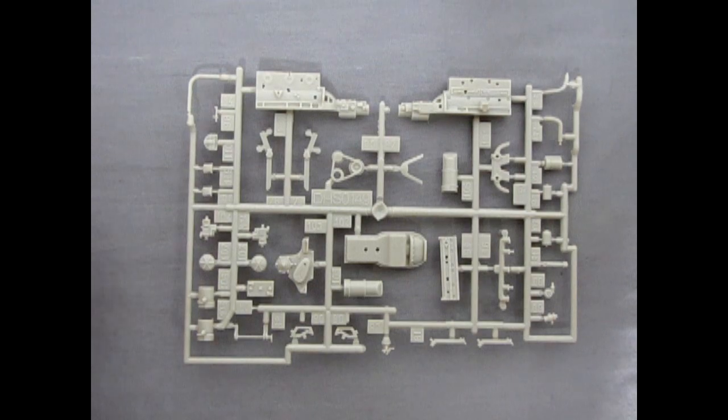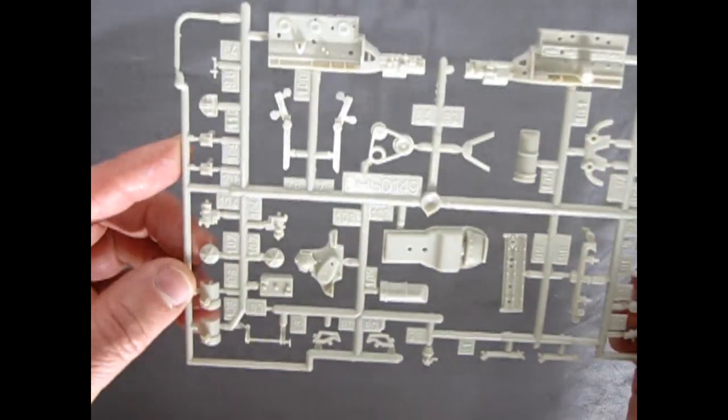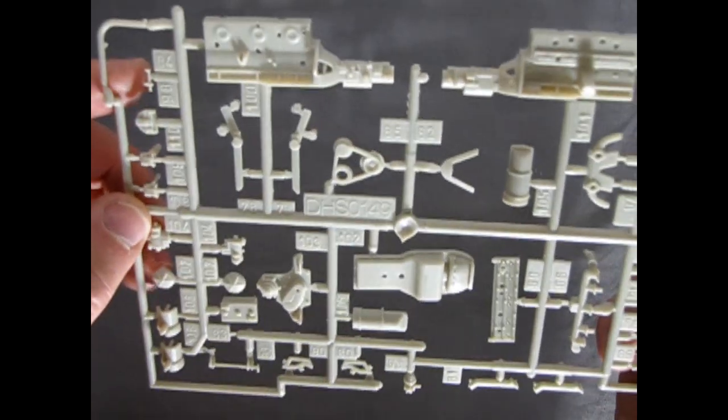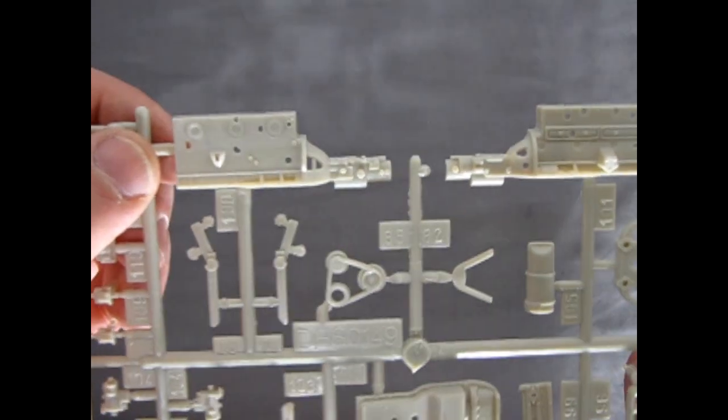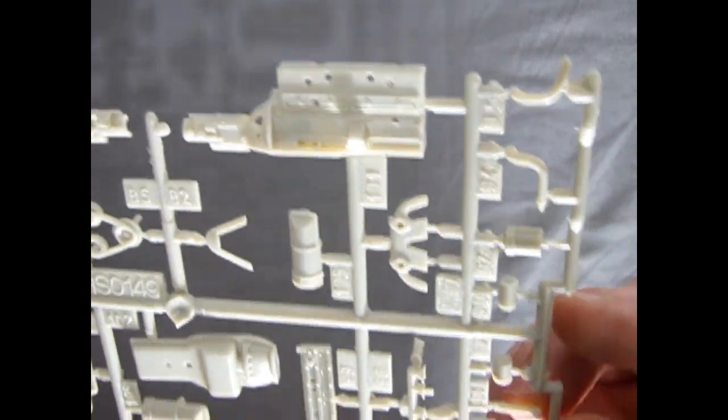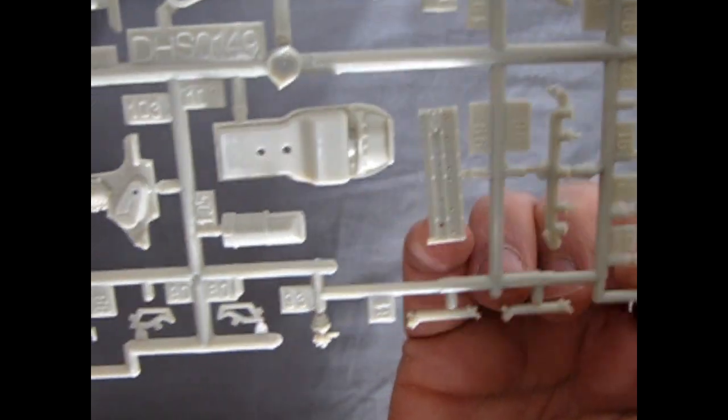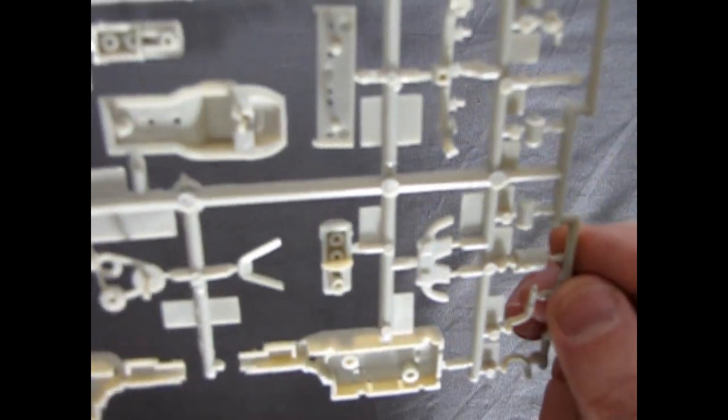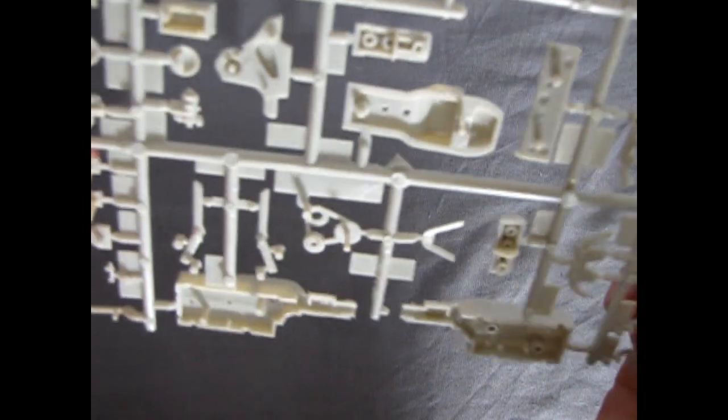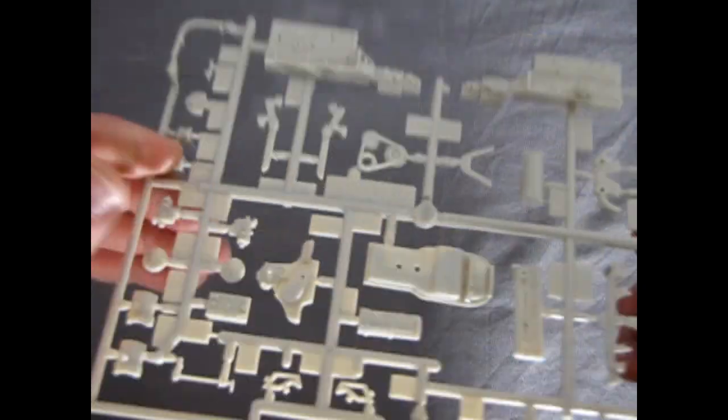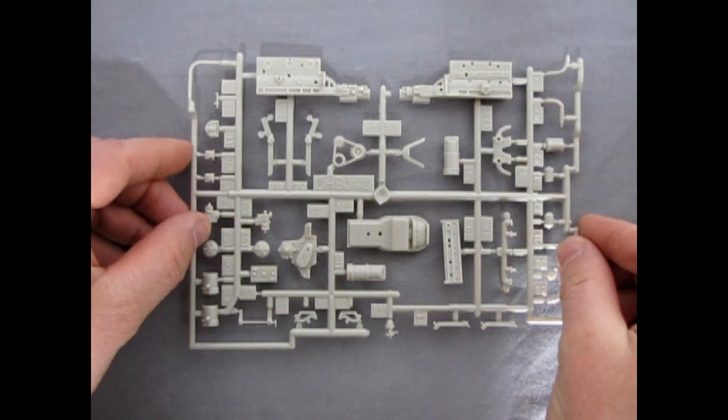Our first parts tree includes all the components to build our engine as well as some under hood details. And again you can see the molding on this is excellent. Just take a look at that twin H power engine as well as our cylinder head here. There's our oil pan and transmission cover. Again very nicely done. Underneath of course very good from this end too. A couple of little mold marks but these should not present much of a problem as you build this great model kit.